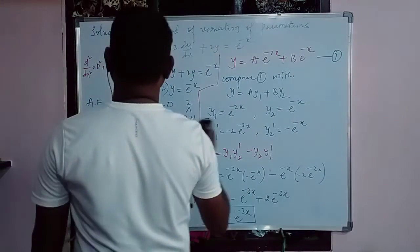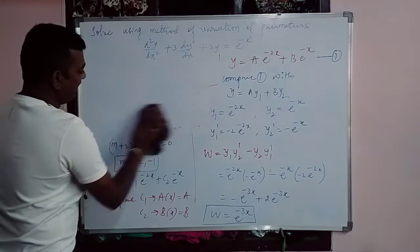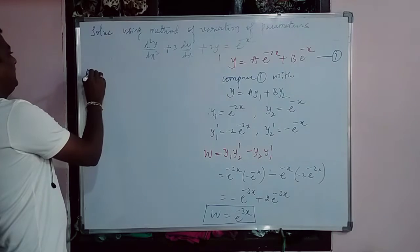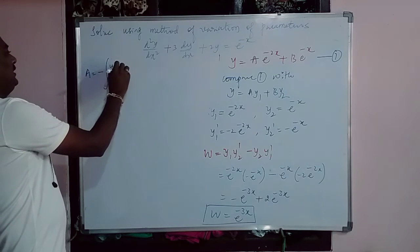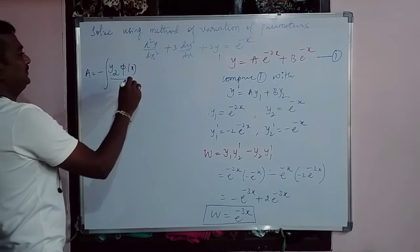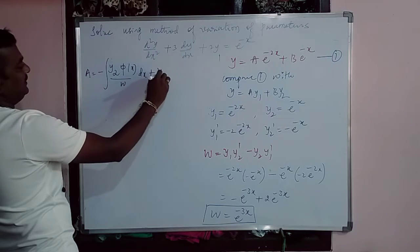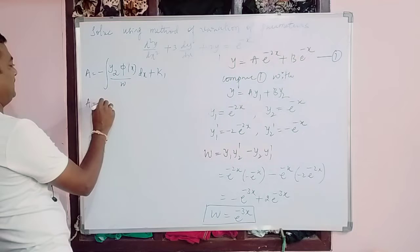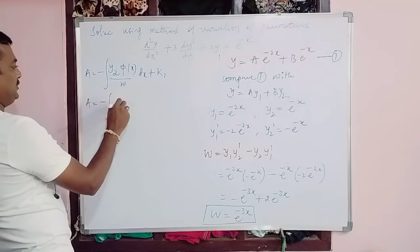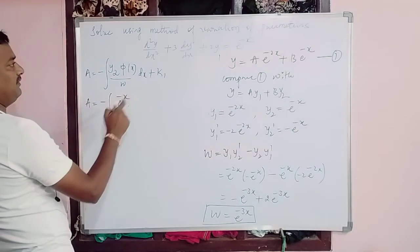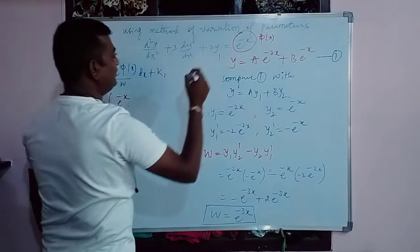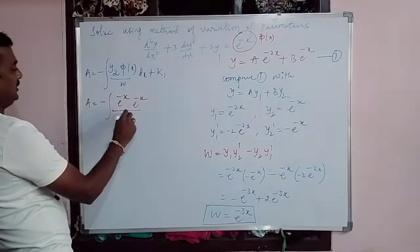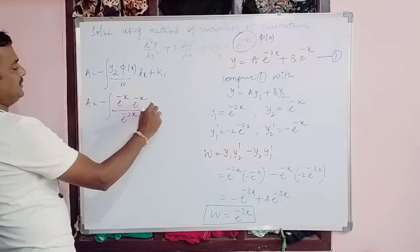After finding y1, y2, and W, we find capital A and capital B. The formula for A is: A = -∫(y2·φ(x)/W)dx + k1. Here y2 = e^(-x), φ(x) = e^(-x) (the right-hand side), and W = e^(-3x). So A = -∫(e^(-x)·e^(-x)/e^(-3x))dx + k1.